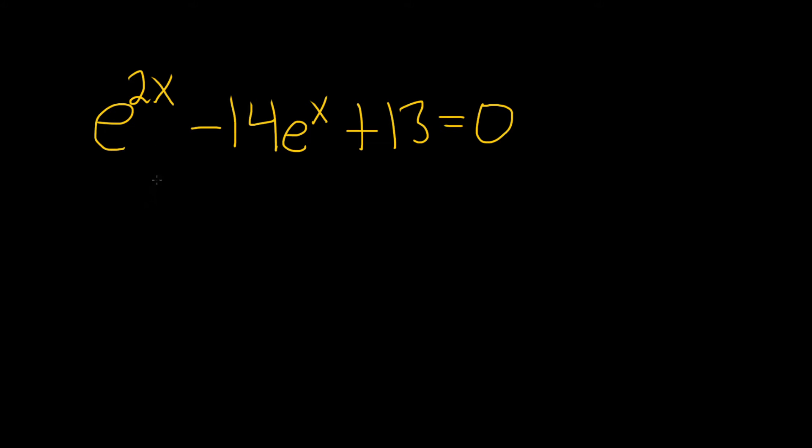So we can think of this as follows. This is really e to the x squared, right? Properties of exponents say that you can multiply the exponents to get this. e to the x minus 14, e to the x plus 13 equals 0. So it's really a quadratic.